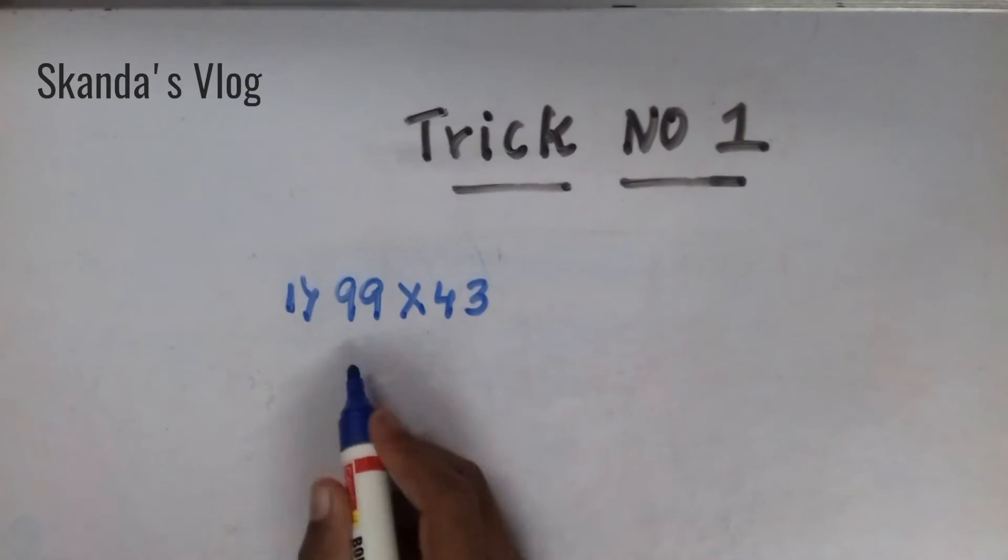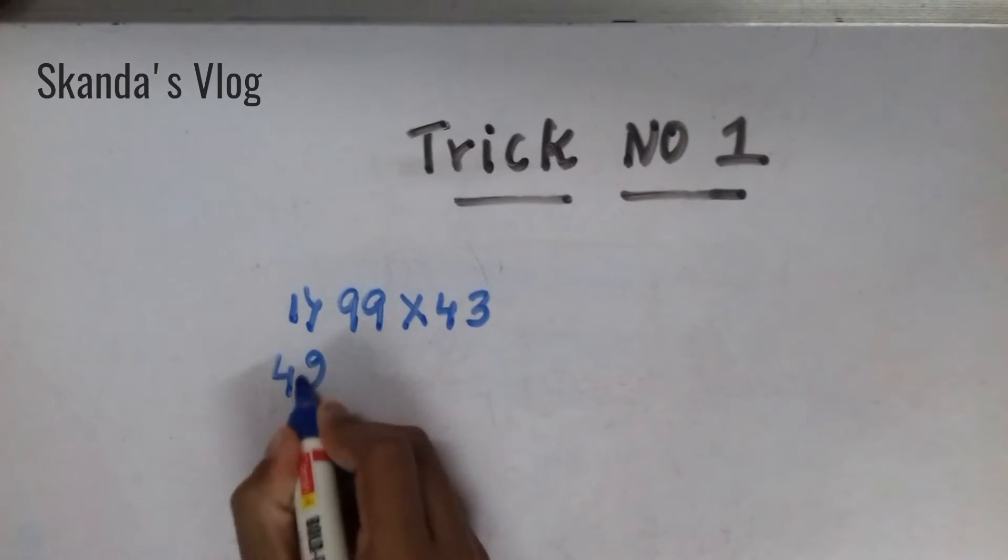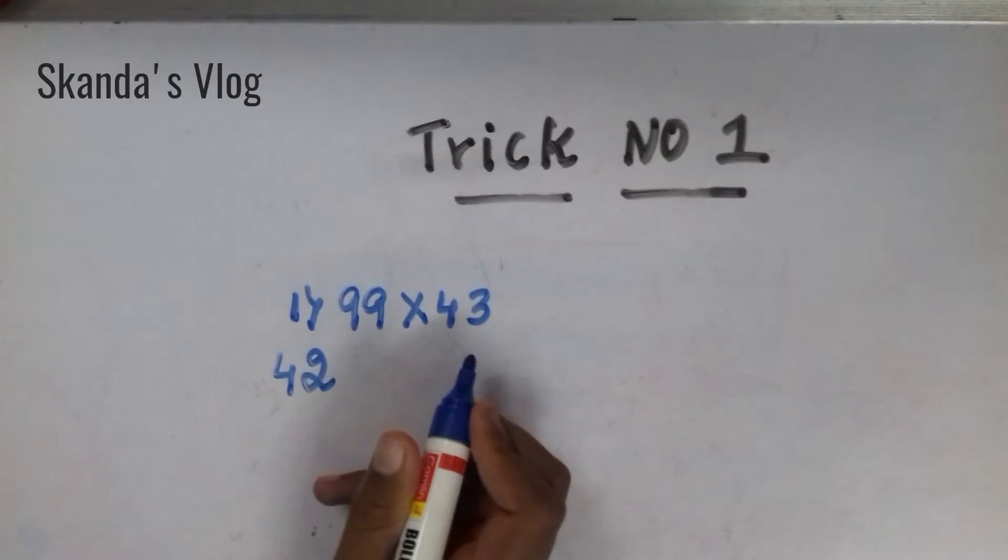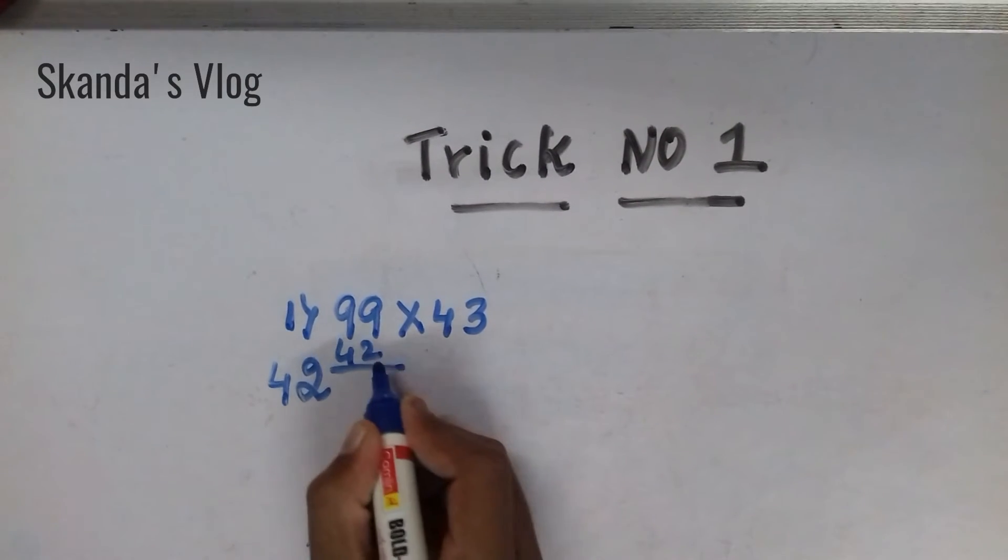Now, if the sum is like this, this is 43. So, 42. Minus 1 digit, then you will get. Now, put this 42 here and minus.